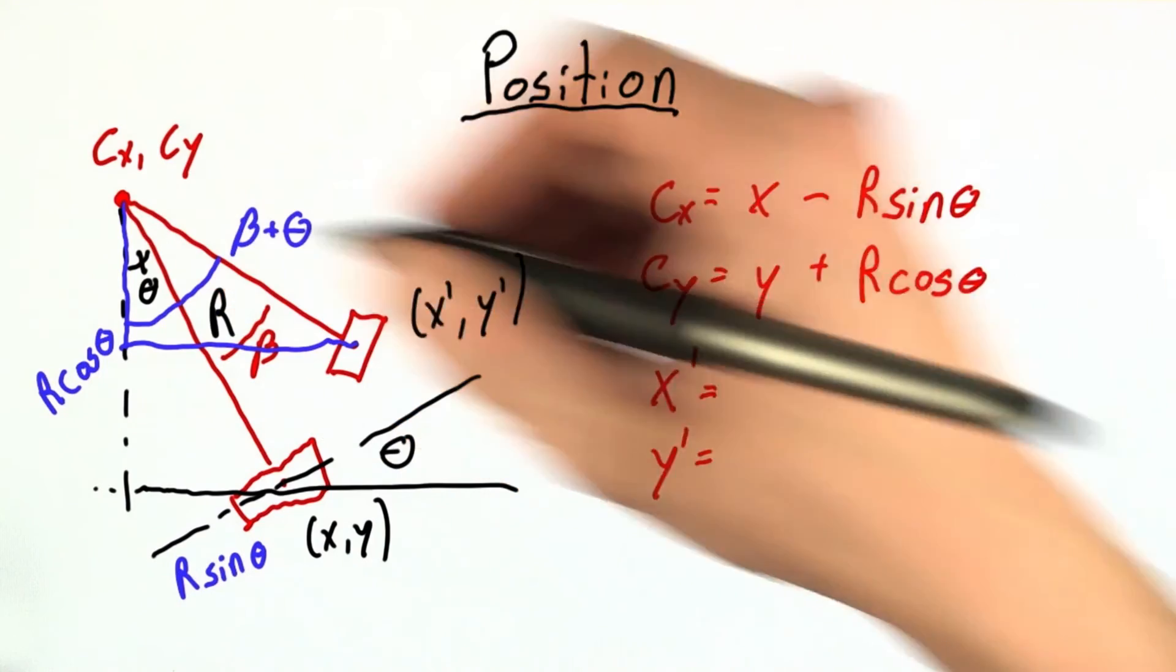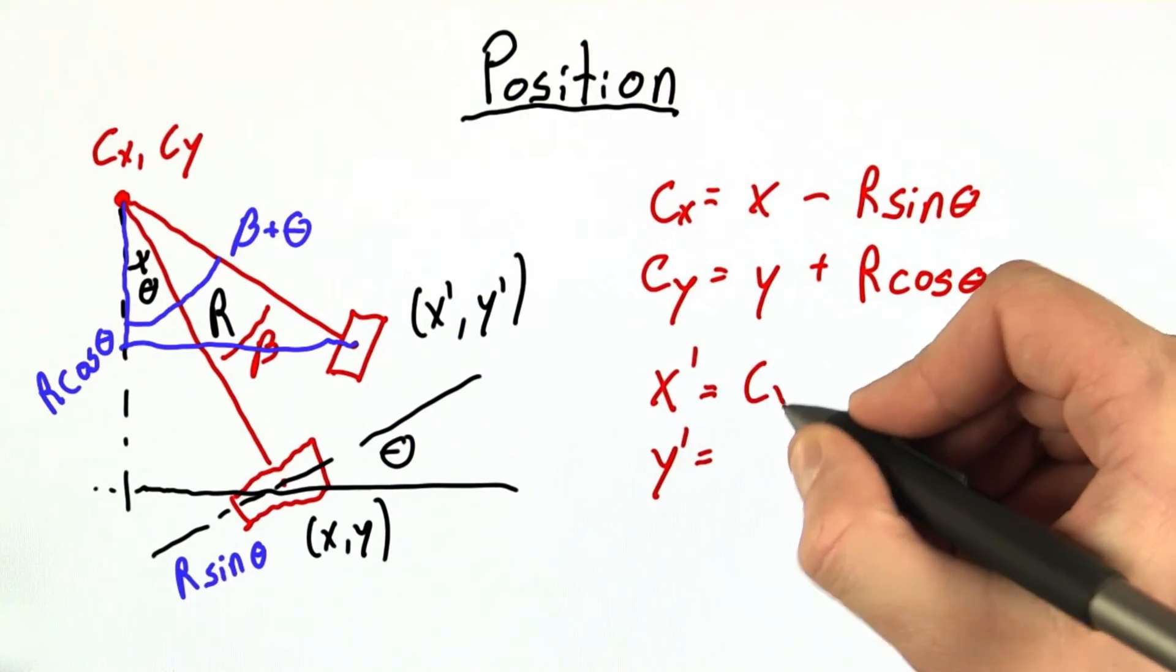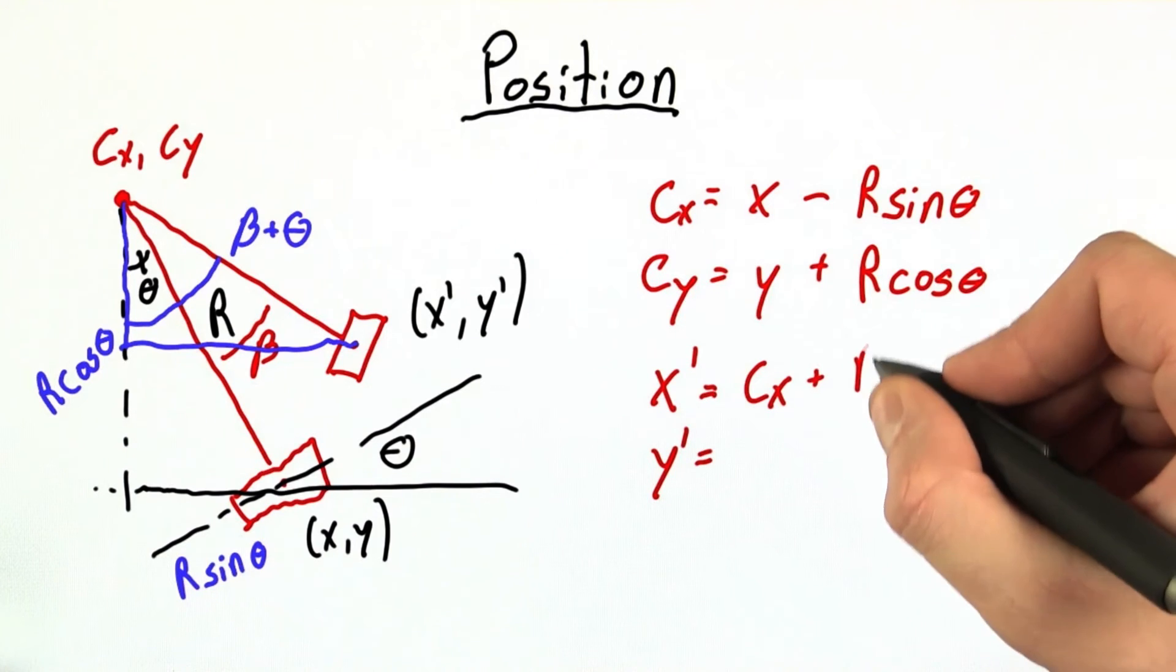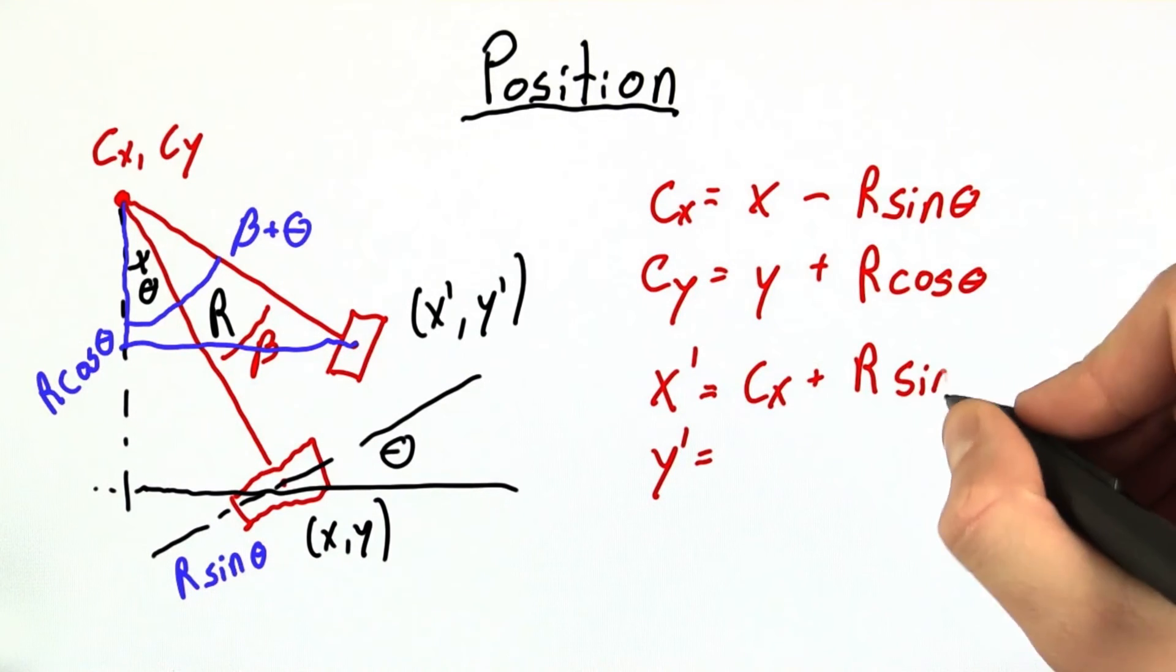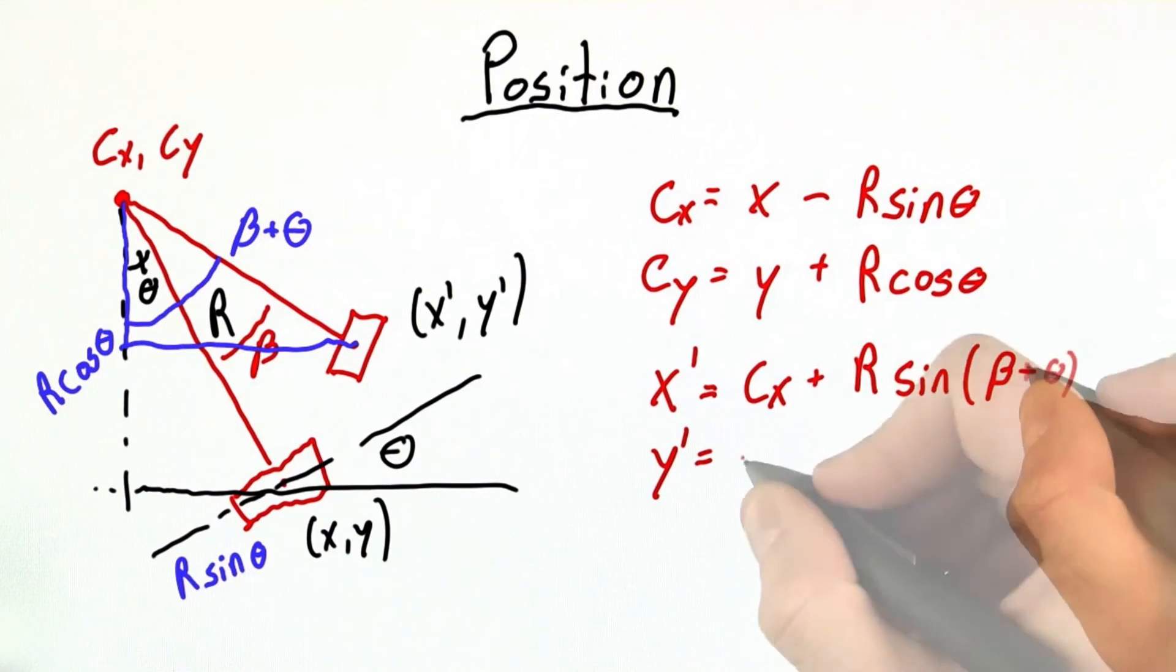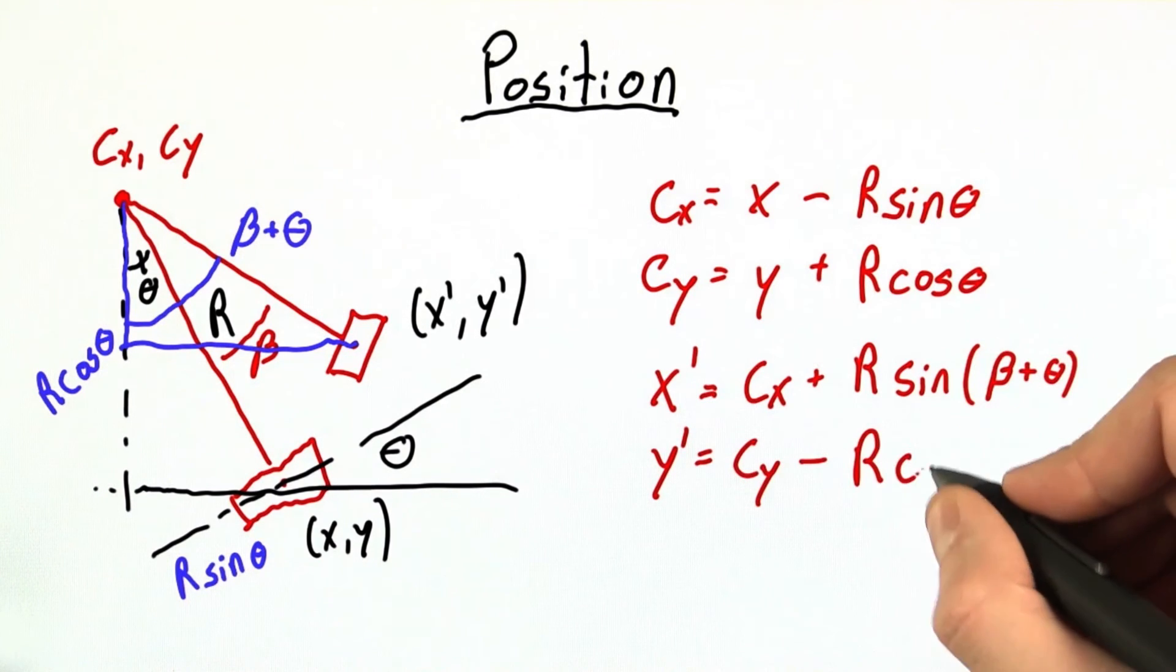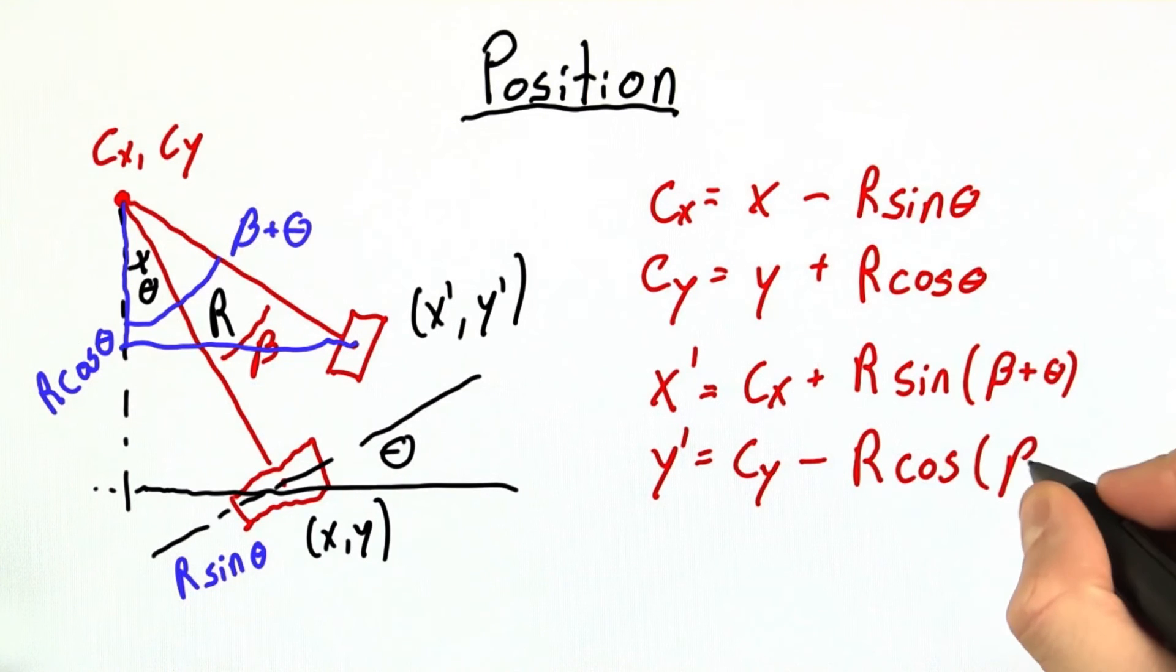So, working from our center point, x prime is going to be equal to cx plus this extra distance, which is r times the sine of beta plus theta. And the y prime we can see will be cy minus the extra distance of r times the cosine of beta plus theta.